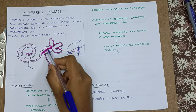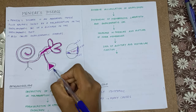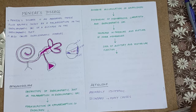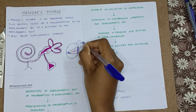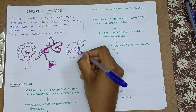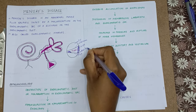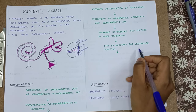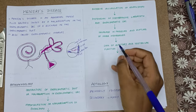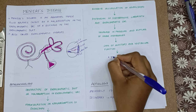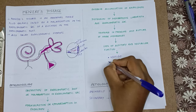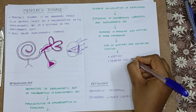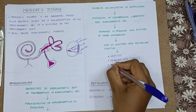The membranous labyrinth where the endolymph is filled and the endolymphatic sac distends, there is increase in pressure and rupture of inner membranes. Now there are two membranes: the Reissner's membrane and the basilar membrane. When endolymph production increases, it is going to rupture the Reissner's membrane and causes loss of auditory functions and vestibular functions. The triad of Meniere's disease: first is vertigo, then hearing loss, which is a sensorineural type, and the third one is tinnitus.